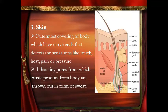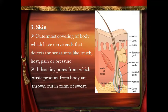The next sense organ is the skin. The skin is the outermost covering of the body, which has various nerve endings that detect sensations like touch, heat, pain, or pressure. It has tiny pores which help in throwing out waste from the body in the form of sweat. The skin not only covers the body but also helps in maintaining the body temperature.